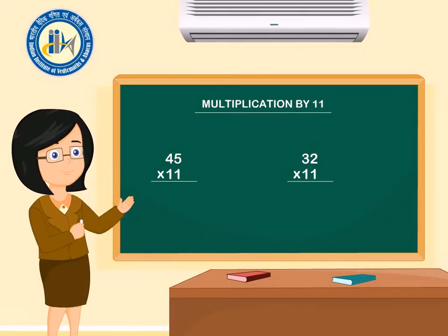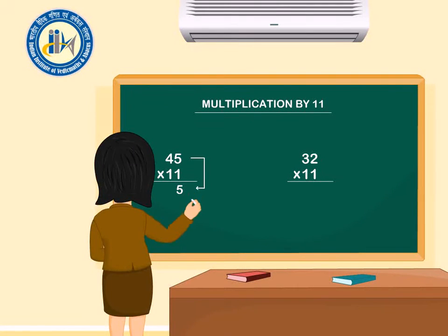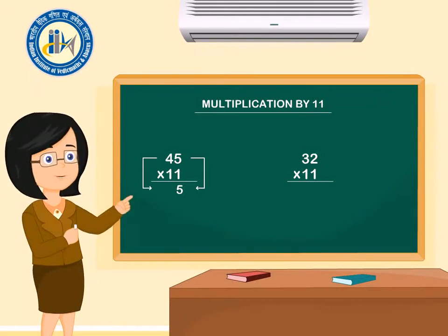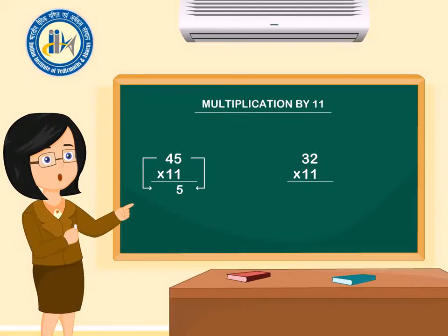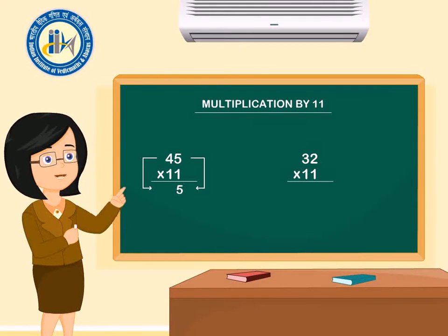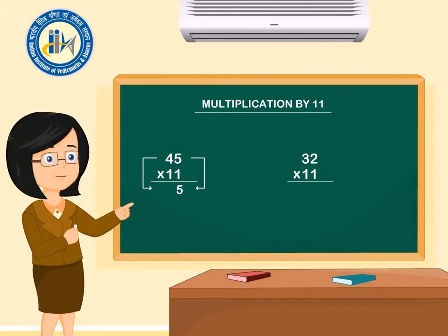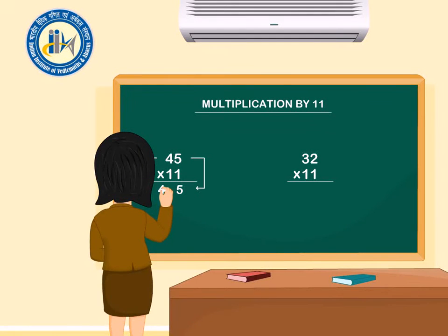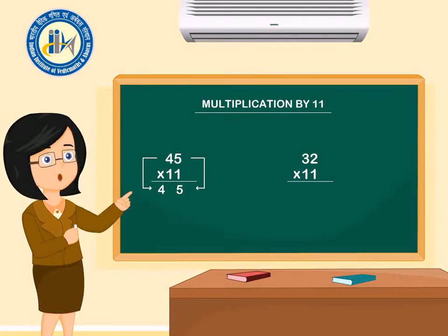Whenever we will multiply a double digit number with 11, we will place 5 at ones place only. As 4 is on our 10th place, so we will place 4 on the 100th place. We will put some gap in between.